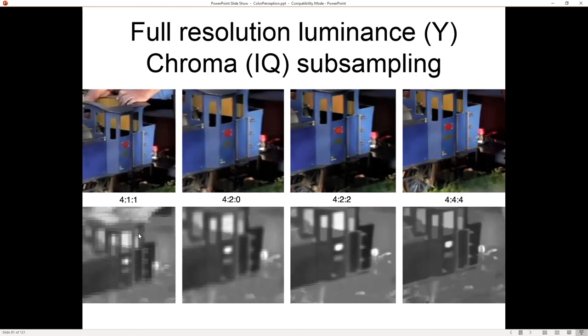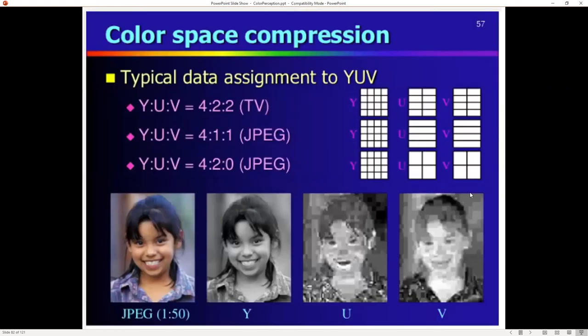They all look like their full resolution. But if we look in the IQ space, the subsampling here at 4:1:1, there's a lot less resolution being stored here, but it looks the same. JPEG is another place where this is done.